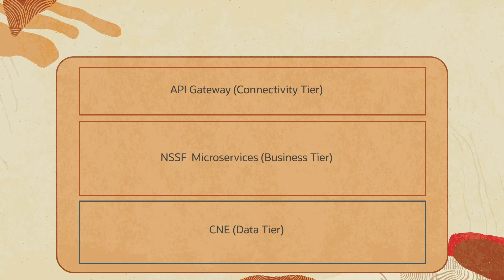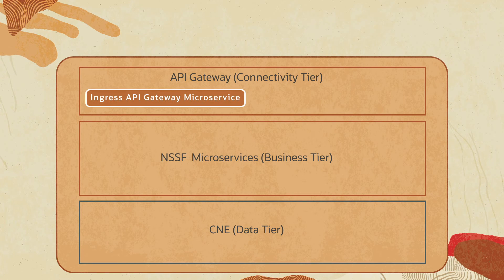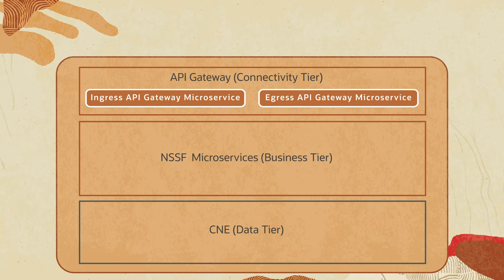The connectivity tier load balances the traffic via Ingress API Gateway and Egress API Gateway. It also provides authenticity and integrity protection.